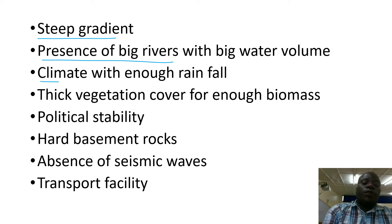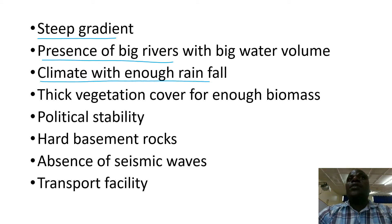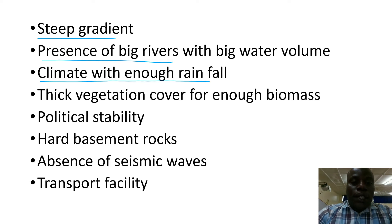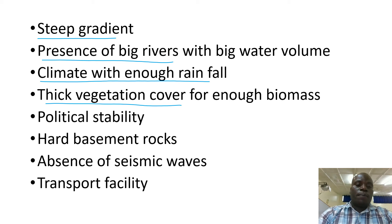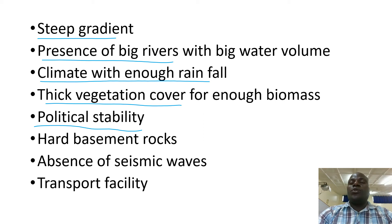Climate with enough rainfall will increase the volume of the rivers, leading to greater river discharge. When the river volume increases, its velocity increases and turbines will rotate faster to produce power. Thick vegetation is needed for the production of enough biomass. Political stability allows activities of dam construction and power installation to occur throughout the year, from January to December.